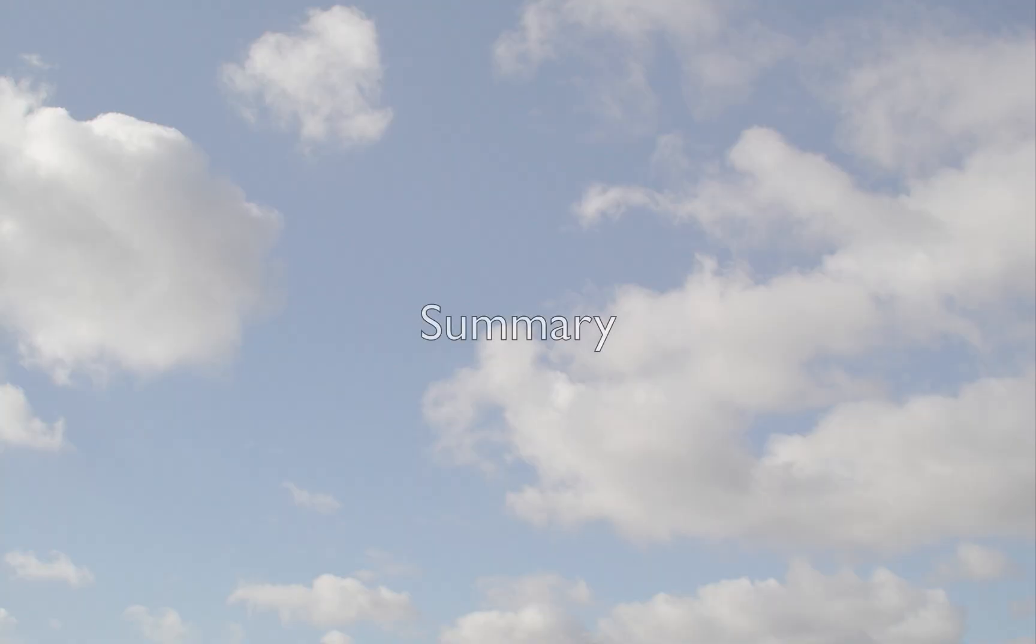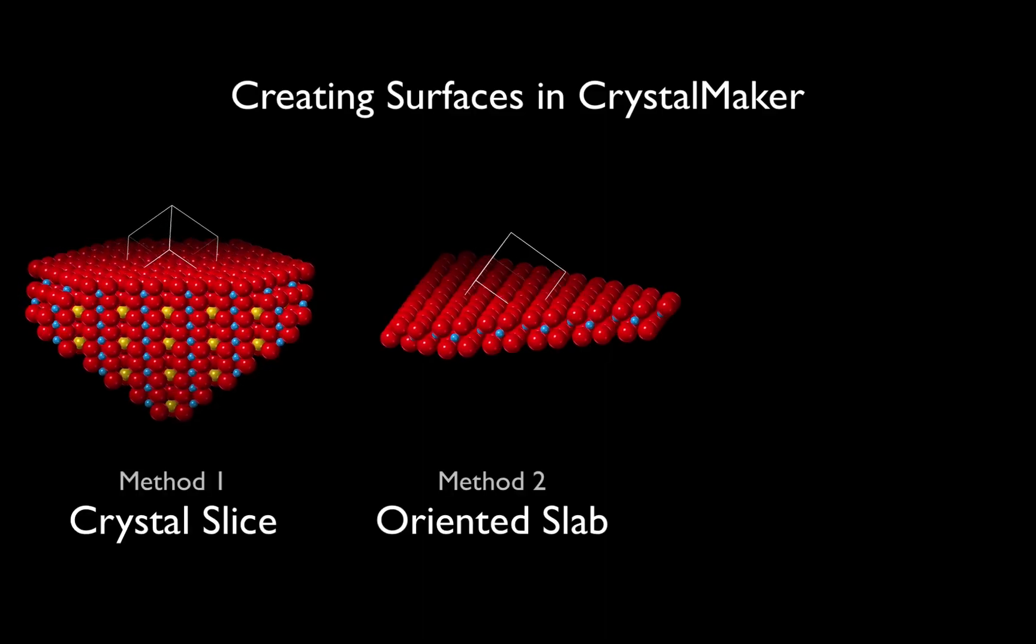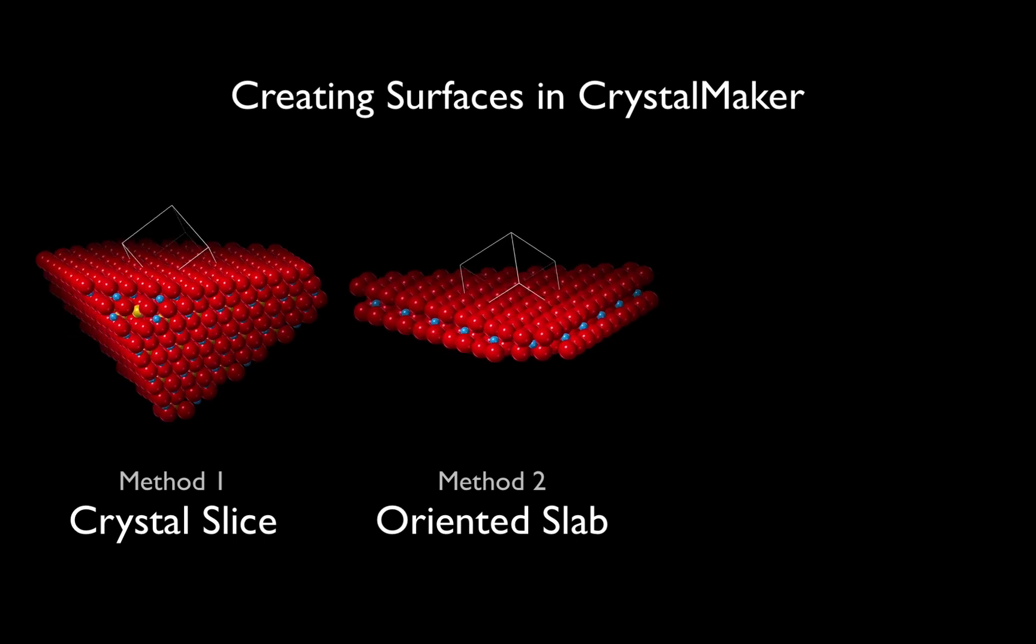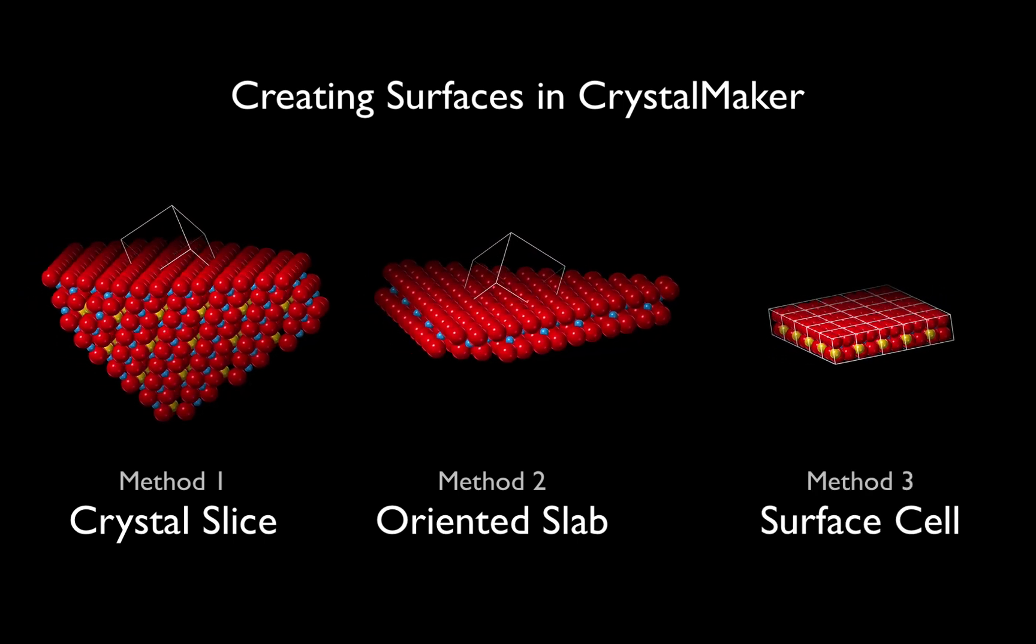To summarise what we've done, we've created surface structures by slicing the crystal, by defining a parallel sided slab, and by transforming the unit cell. Each of these methods can be useful in different applications.